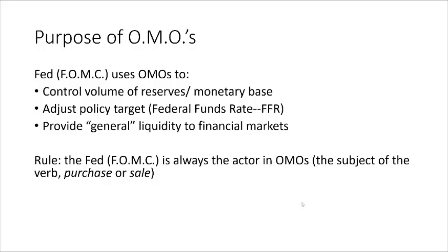The Federal Open Market Committee, or FOMC, is the entity of the Fed that sets policy. It consists of up to seven members of the Board of Governors, plus five of the 12 regional Fed presidents. The New York Fed is always on the open market committee, and the other four rotate among the other 11 banks. The FOMC is always the actor in open market operations — conducting open market purchases and open market sales.